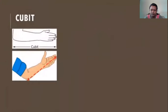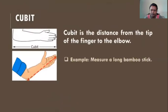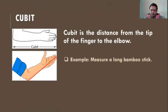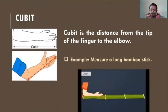Cubit is the distance from the tip of the middle finger to the elbow. For example, let us measure a long bamboo stick. So we are going to measure the long bamboo stick using cubit.